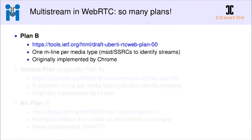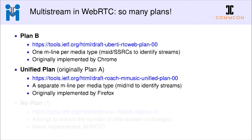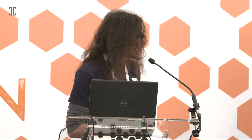The problem was missing interoperability. There were basically very different ways of advertising the ability to have multiple streams in the SDP. Plan B used a single M-line per media type while unified plan used different M-lines for each media type. Plan B had been implemented by Chrome for a long time; Firefox implemented unified plan from the get-go. This meant that if you wanted multiple streams without a server in the middle, there was no way to get the two browsers to talk to each other.